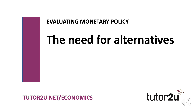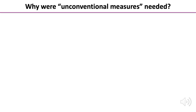Hello and welcome to part four of our online lesson evaluating monetary policy. In an earlier lesson we described quantitative easing as an unconventional measure of monetary policy that was used by a number of central banks including the European Central Bank, the Federal Reserve in the United States, the Bank of Japan and the Bank of England. Pause the video now and see if you can think of a couple of reasons as to why these unconventional measures were used in the wake of the global financial crisis.